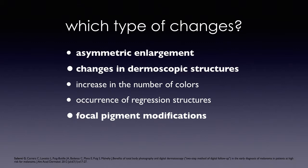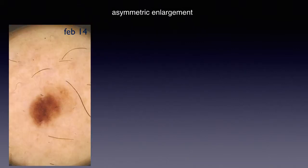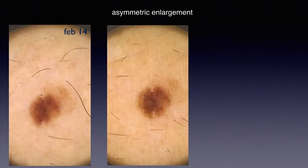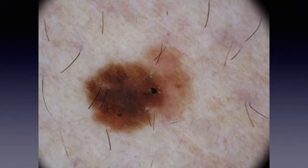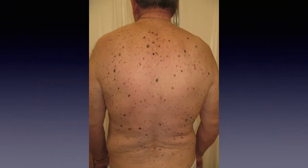Let's look at some examples. This is an example of asymmetric enlargement — only one side of the lesion is growing during this one-year-and-a-half follow-up. And this is the picture at higher magnification. This was an in situ melanoma.